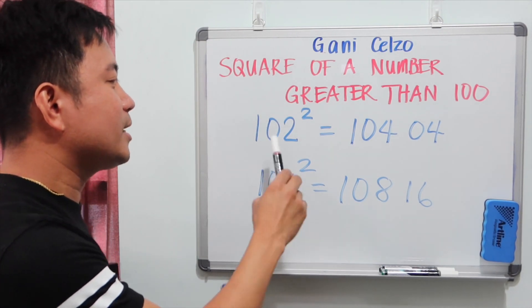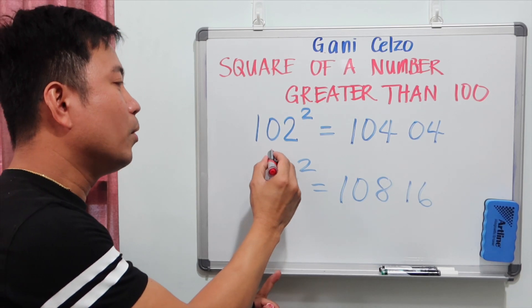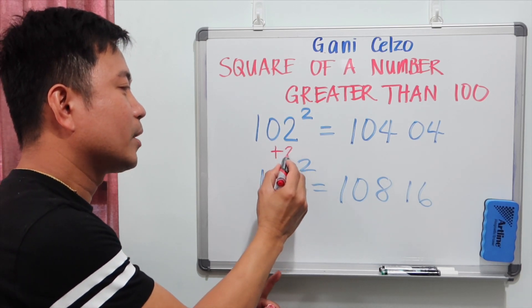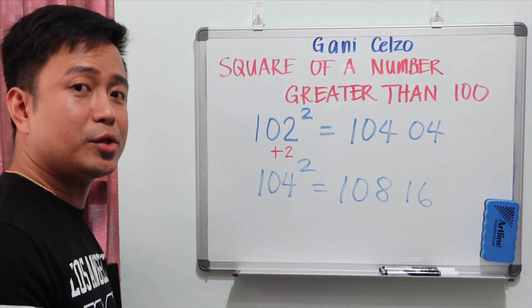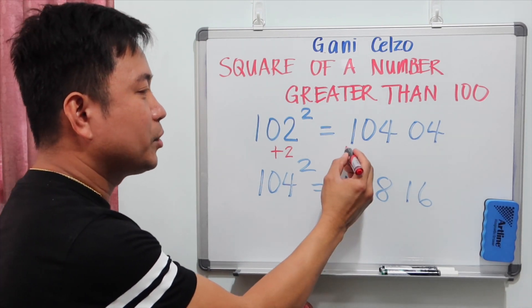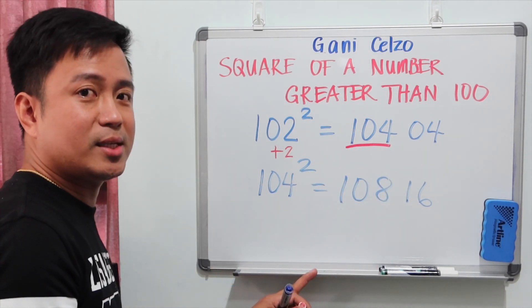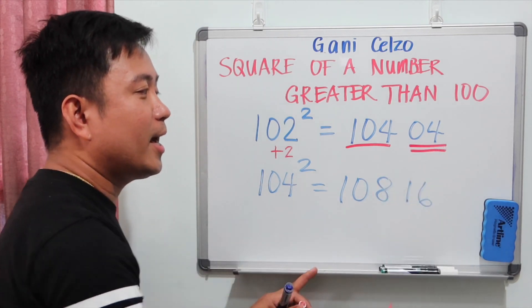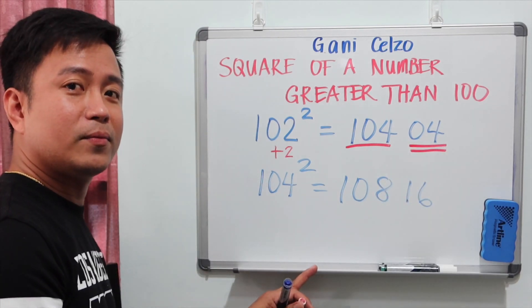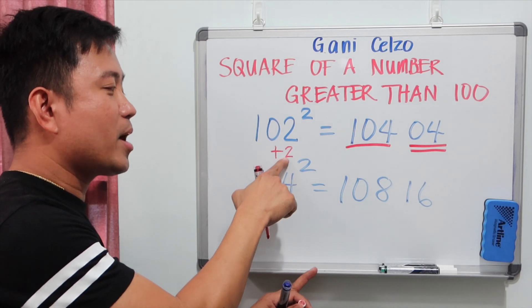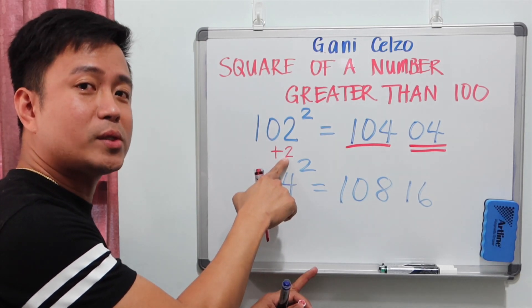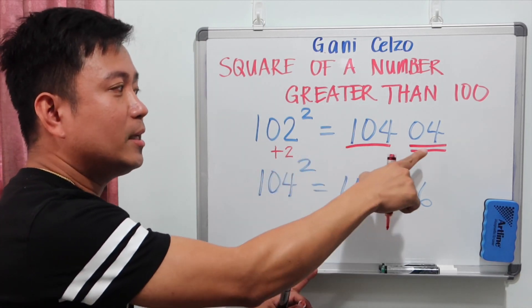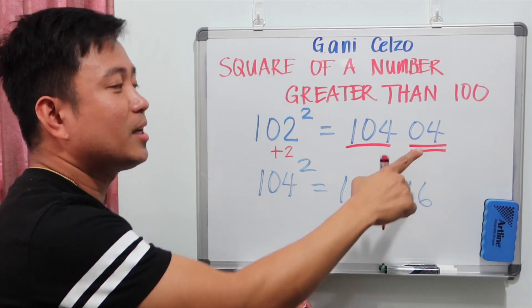But the first example, 102, that is two more than 100. So I will add 2 to 102. That makes it 104. That's the first three digits. Can you guess where did I get that 04? That's the square of that number. So 2 square is 4. But I need 2 digits. So that makes it 04.